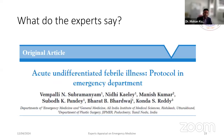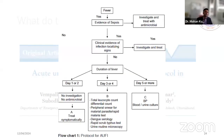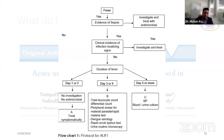Another approach from AIIMS Rishikesh and Jipmer (published 2020) suggests: whenever a patient comes with fever, look for evidence of sepsis — if present, follow surviving sepsis guidelines. If there is clinical localization such as limb or chest infection, investigate accordingly. If there is no localization and no sepsis, divide by duration of fever: day one to two — no investigations, treat symptomatically; day three to four — routine investigations plus rapid kits for malaria, dengue, and scrub; after day four — add cultures as well.